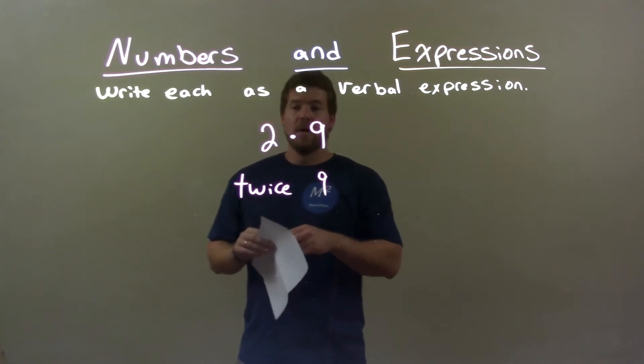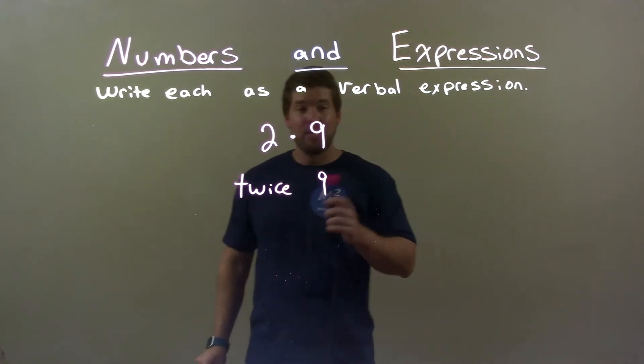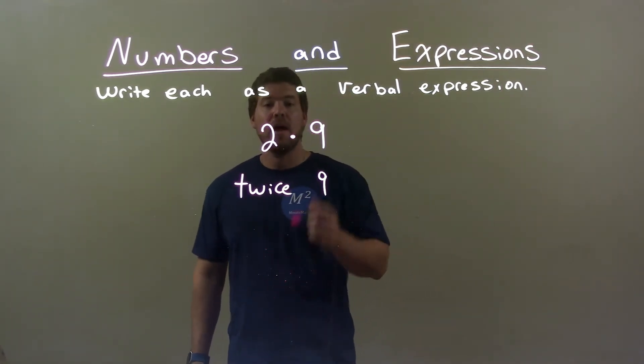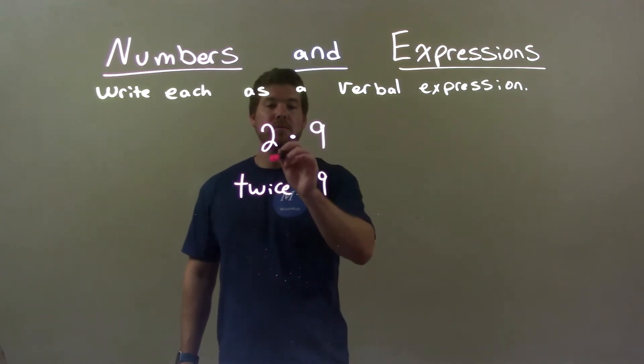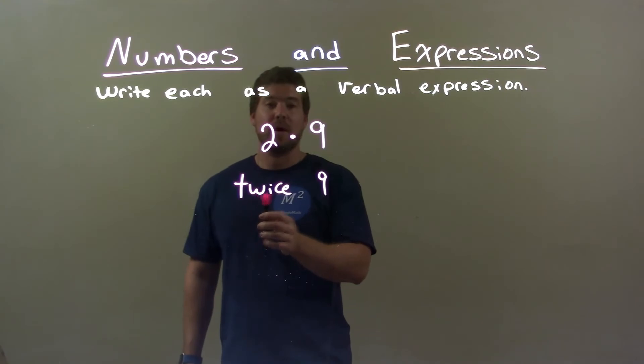Quick recap. Given 2 times 9 and we need to write that as a verbal expression, the way we can write that is we have 2 and 9, it's twice 9. So I chose to write this one as twice 9.